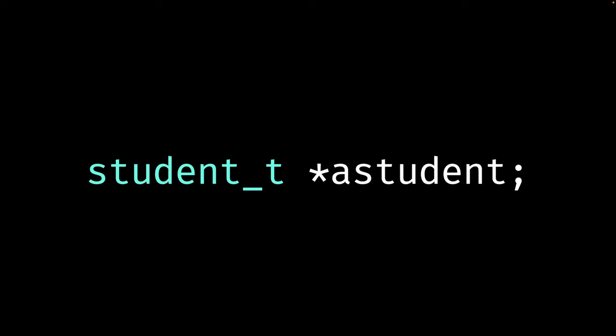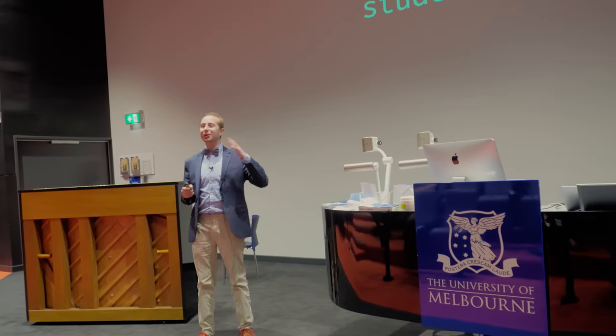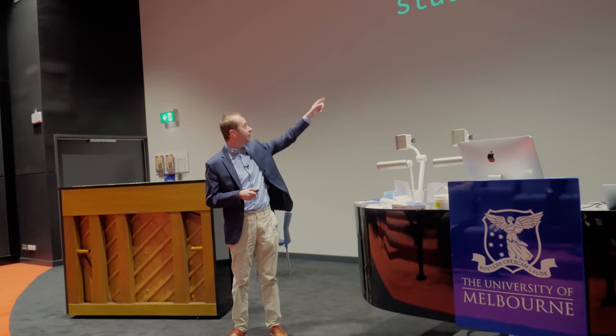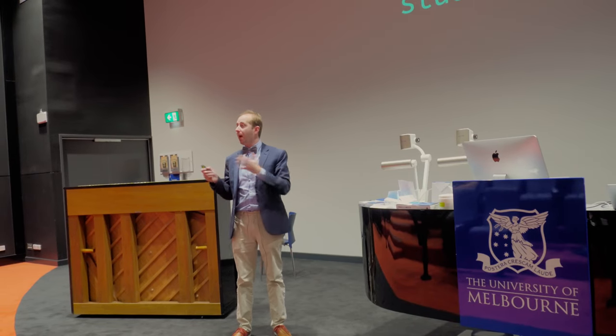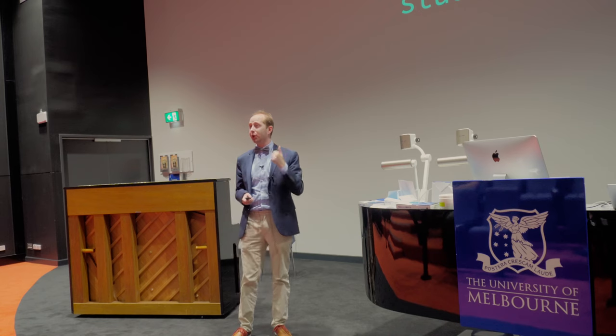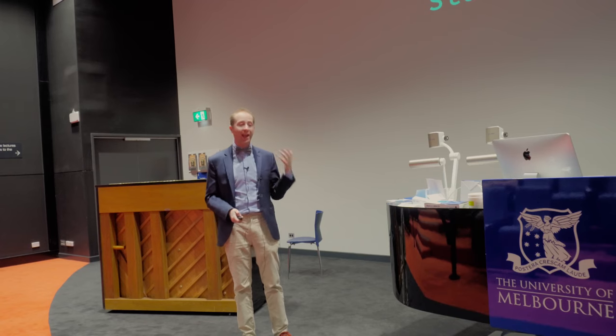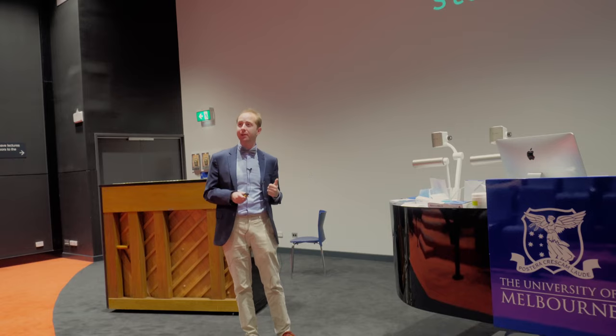This is the declaration for a pointer to a struct. It's very similar to declaring a normal struct except we add the pointer symbol — the asterisk. However, be very careful: this does not actually give us any space to store the object. This is just an 8-byte object that can store an address at best. You can't yet fill this up with the contents of a student. We'll see how to do that in a minute.